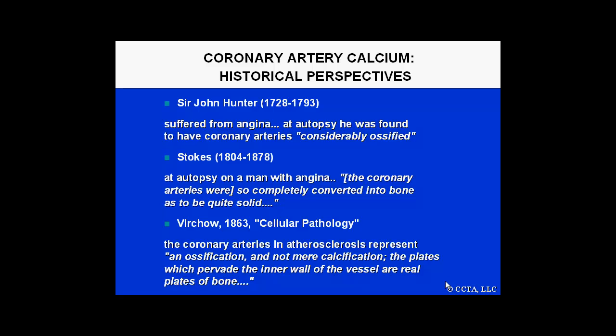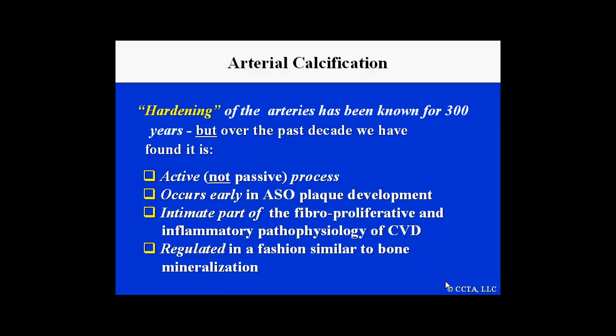Over the past 10 or 15 years, it's become clear that coronary artery calcification, calcification of the aortic valve, and other areas of vascular calcification are very importantly related to the development of atherosclerotic lesions. Hardening of the arteries has been known for hundreds of years, but only over the past decade have we found this to be an active, not necessarily a passive process. It is an intimate part of fibro-proliferative and inflammatory pathophysiology of cardiovascular disease, and it appears to be regulated in a fashion similar to bone mineralization. In the adventitia of many coronary arteries, one can find osteoclast activating factor, osteopontin, and a variety of other osteoclastic active hormones.